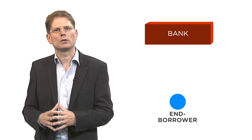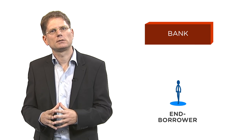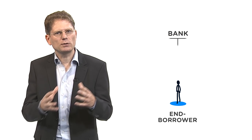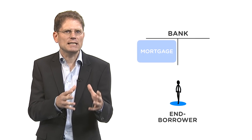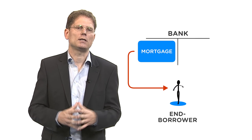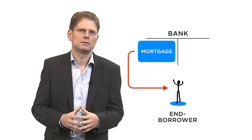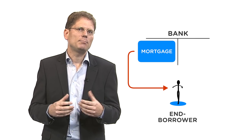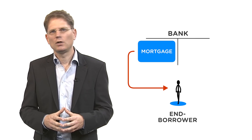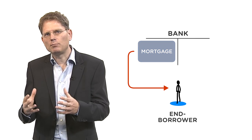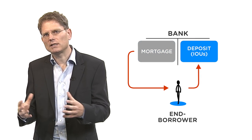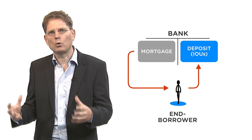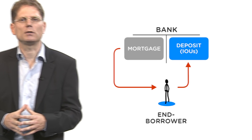In our simple economy, there is a bank and someone we call the end borrower, who might want to buy a house. He goes to the bank and takes out a mortgage — let's say a million dollars. The bank which grants him a mortgage will credit the end borrower one million dollars as deposit, as soon as the mortgage is agreed upon.